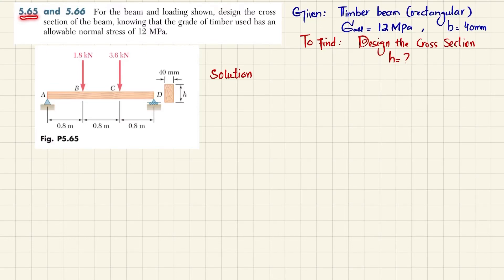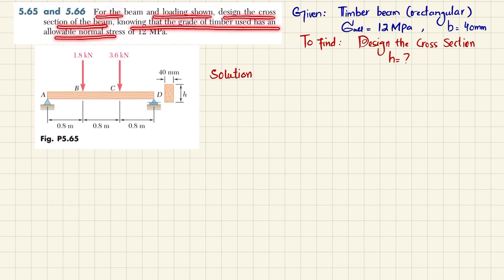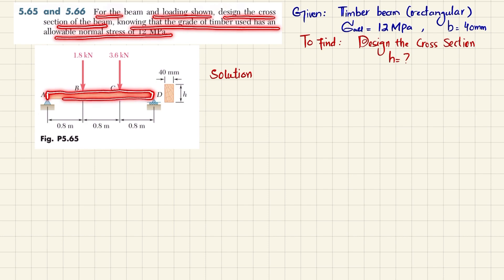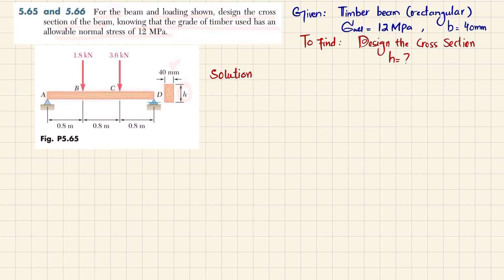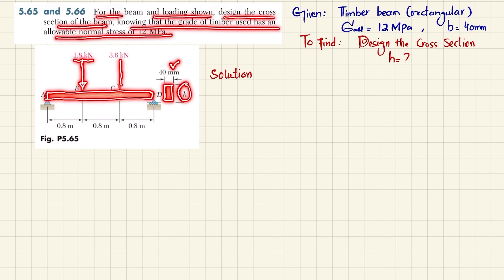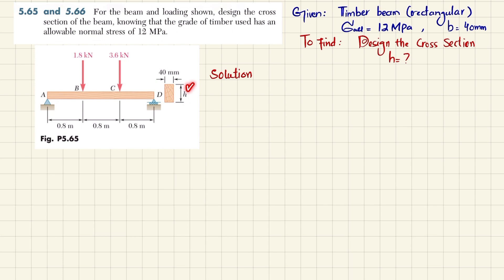Welcome back. Problem 5.65 — for the beam and loading shown, design the cross-section of the beam knowing that the grade of timber used has an allowable normal stress of 12 megapascals. This is a simply supported beam AB made of wood. The cross-section has breadth b = 40 mm and unknown height h. The load at point B is 1.8 kN and at point C is 3.6 kN.